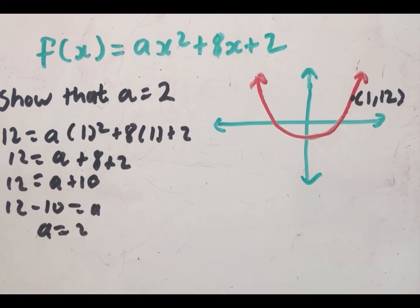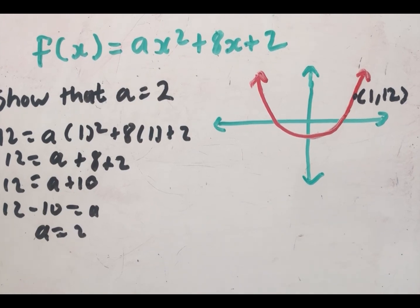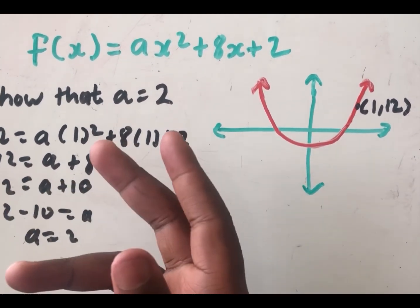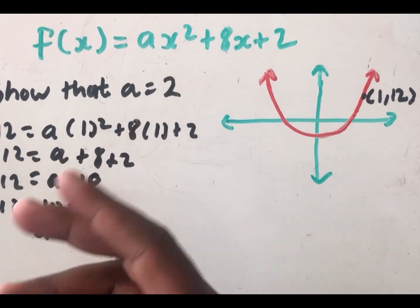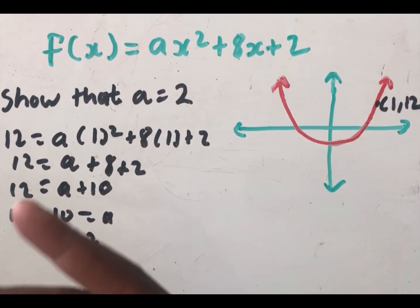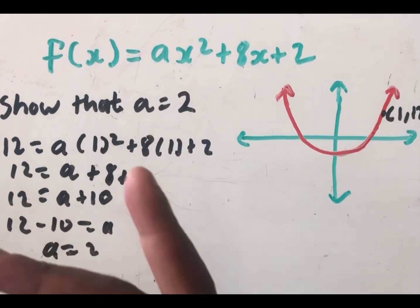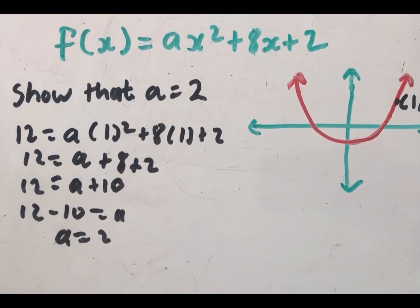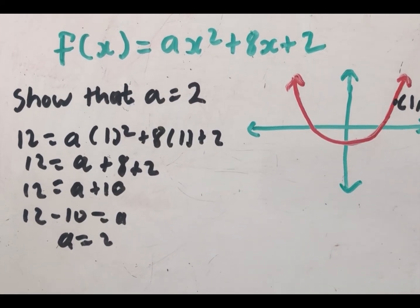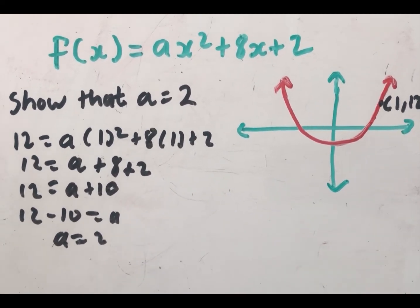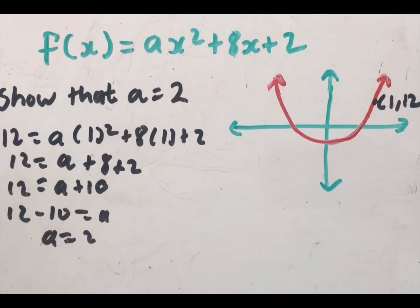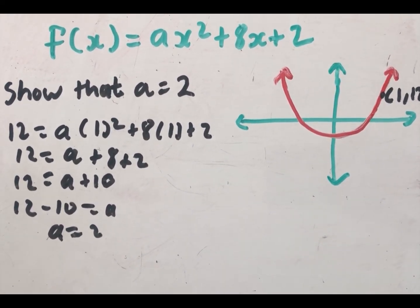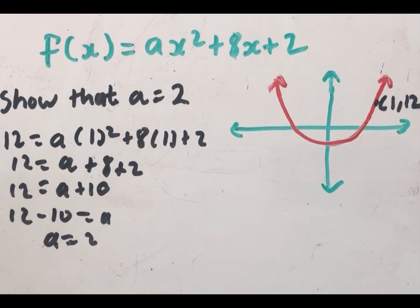So to summarize: when there is one unknown, substitute one point. When there are two unknowns, substitute two points to form simultaneous equations. When there are three unknowns, use either the x-intercept form or the turning point form. The fourth method — finding the equation using the derivative — is covered in another video linked at the end of this video and in the description below.